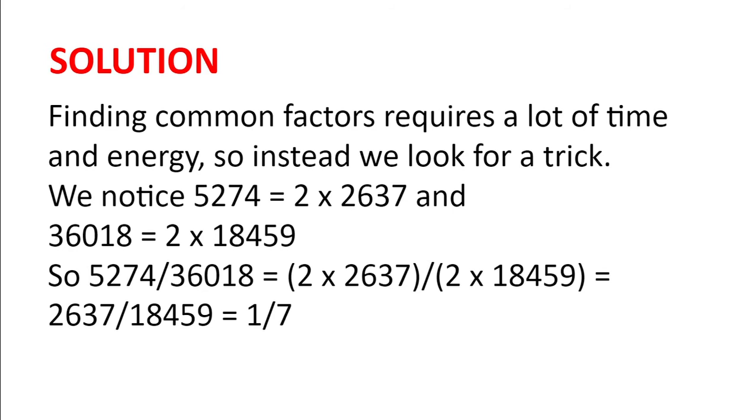So 5,274 divided by 36,918 is the same as 2 multiplied by 2,637 divided by 2 multiplied by 18,459, which is the same as 2,637 divided by 18,459, which is a seventh, as we're told.